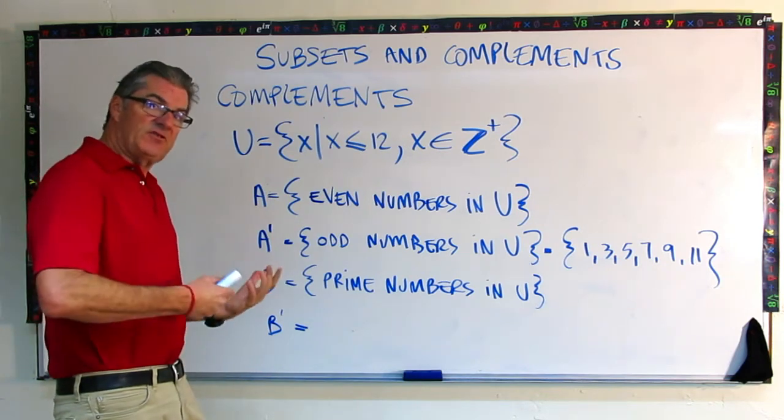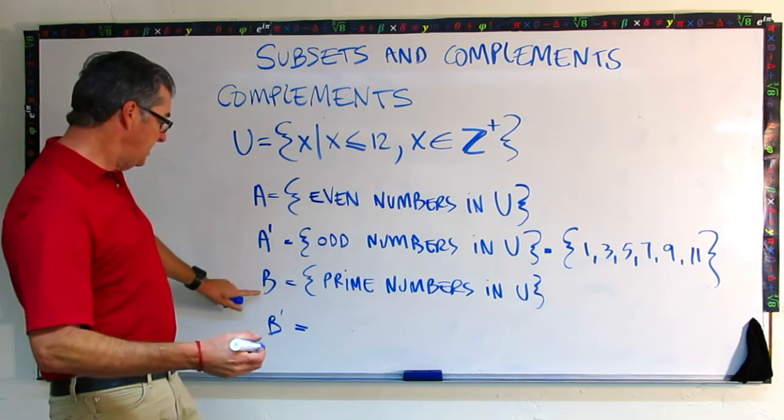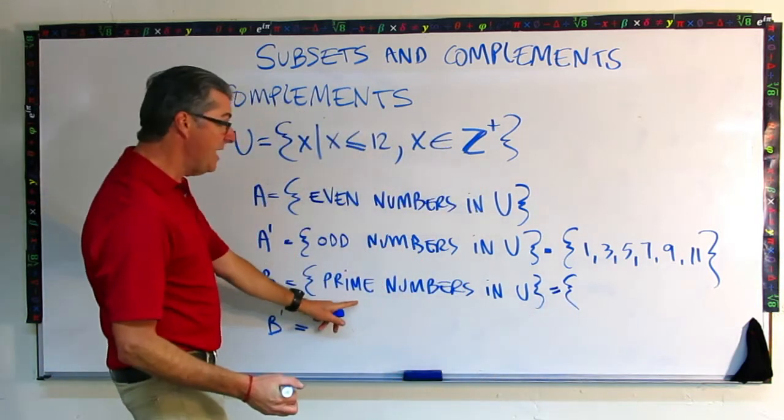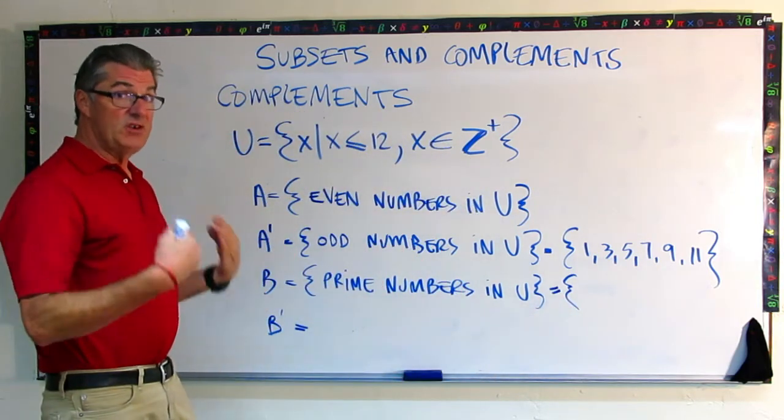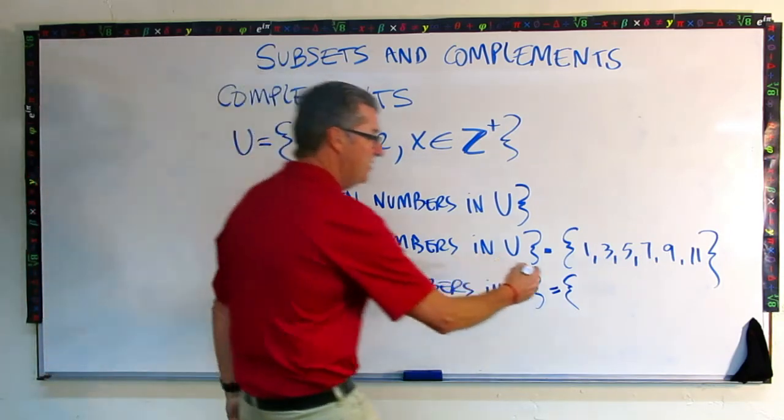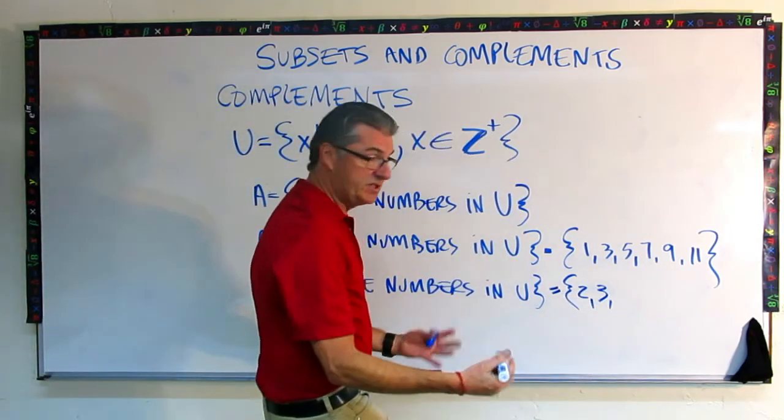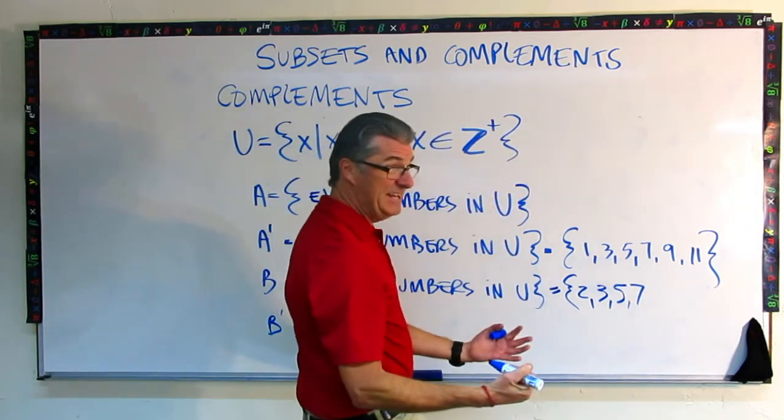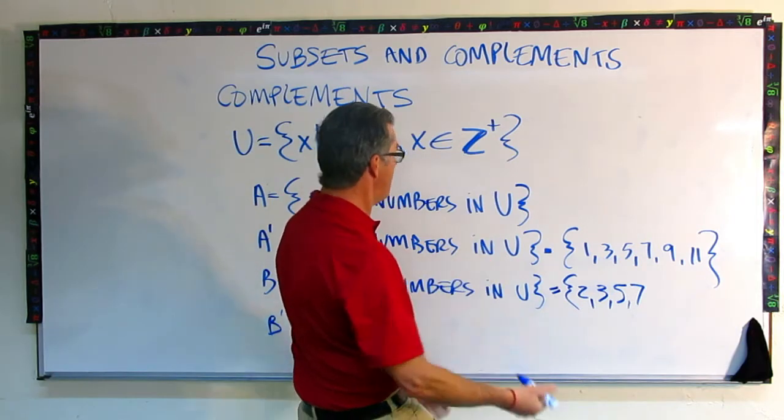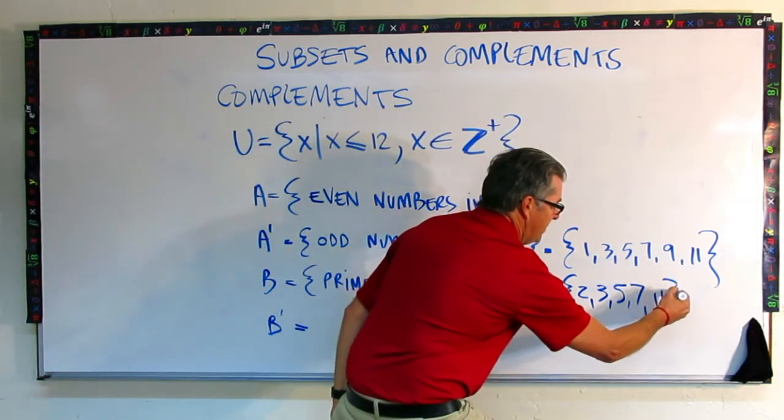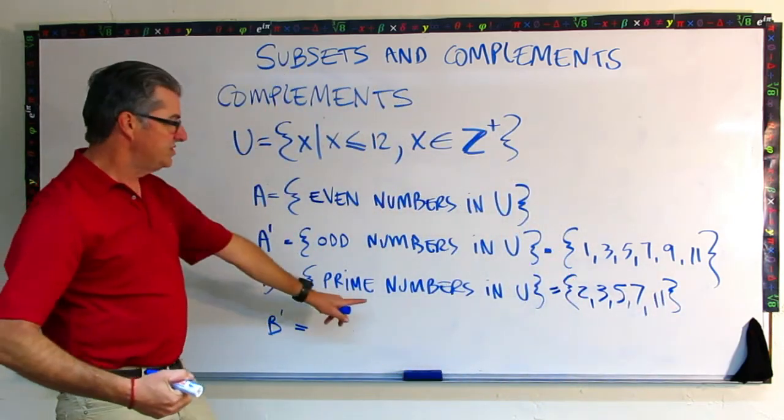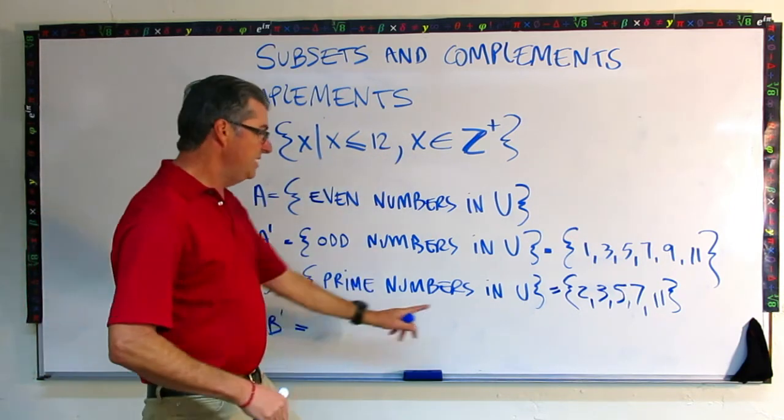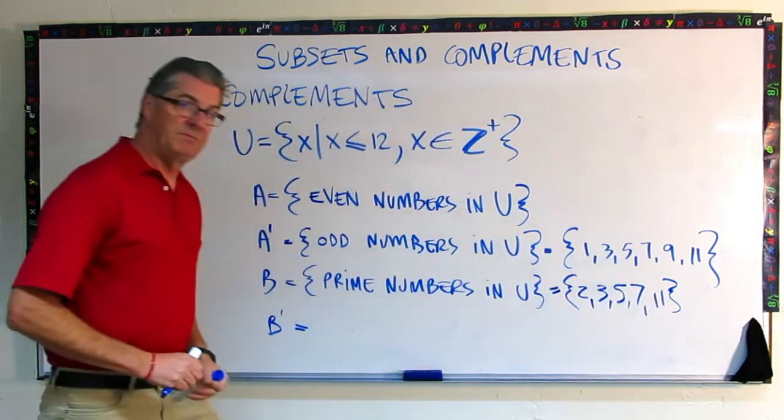If you struggle with that a little bit, maybe one step that would help us, let's show what this set is. So B is the prime numbers in U. Now remember, 1 is no longer considered prime. So we're going to start with 2, 3, 4 is not prime, 5, 6 is not, 7, 8 is not, 9 is not, 10 is not, 11 is prime. So set B, which is the prime numbers in U—remember these are the positive integers less than 12—so set B is 2, 3, 5, 7, and 11.